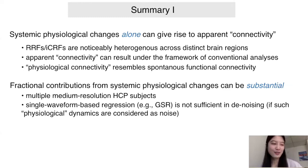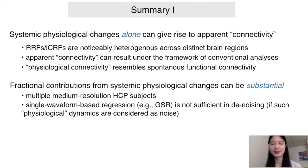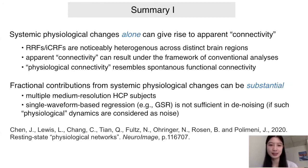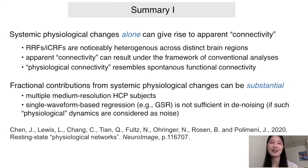If you treat these fluctuations as nuisance and want to derive cleaner neural representations, you probably want to use more complicated models instead of single waveform-based regression, because they are really heterogeneous across different brain regions. Why these physiological dynamics demonstrate patterns similar to neural patterns remains an open question. This work has recently been published in NeuroImage.